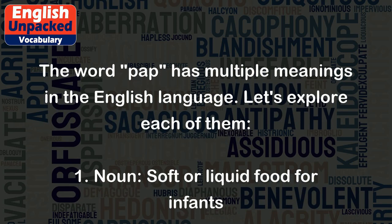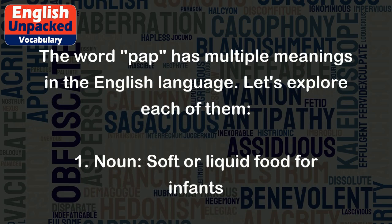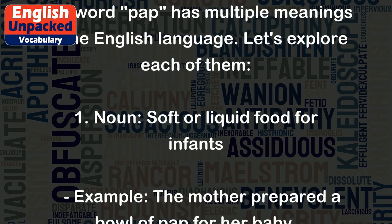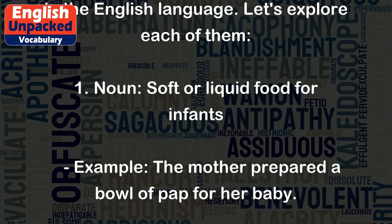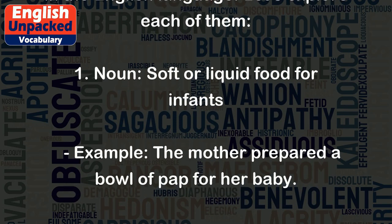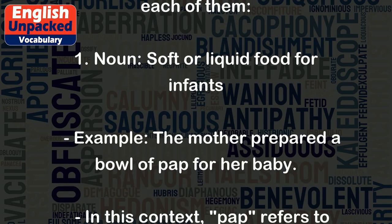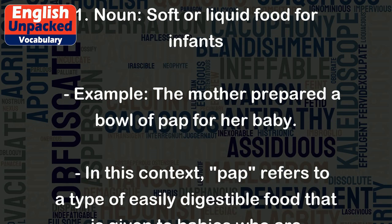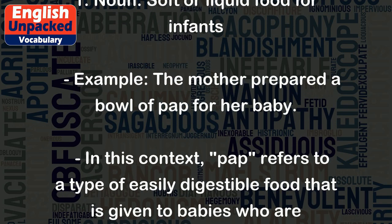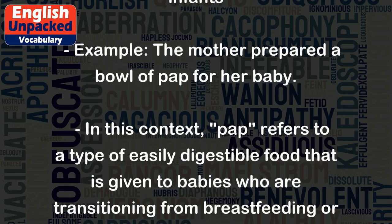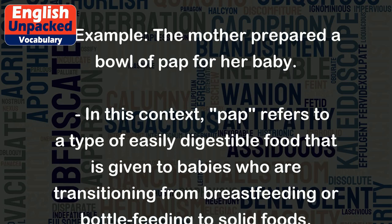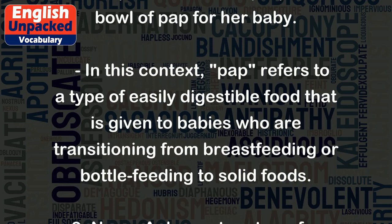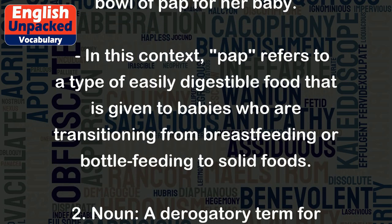1. Noun: Soft or liquid food for infants. Example: the mother prepared a bowl of PAP for her baby. In this context, PAP refers to a type of easily digestible food that is given to babies who are transitioning from breastfeeding or bottle feeding to solid foods.